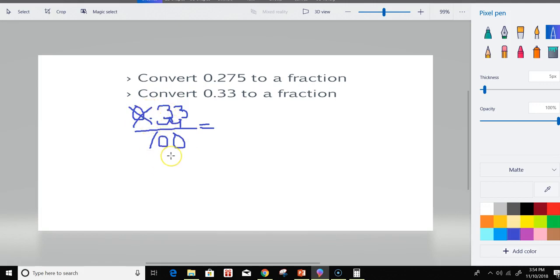In this case, we got 33 over 100. We know that 33's factors are 3 and 11. 11 is a prime number.